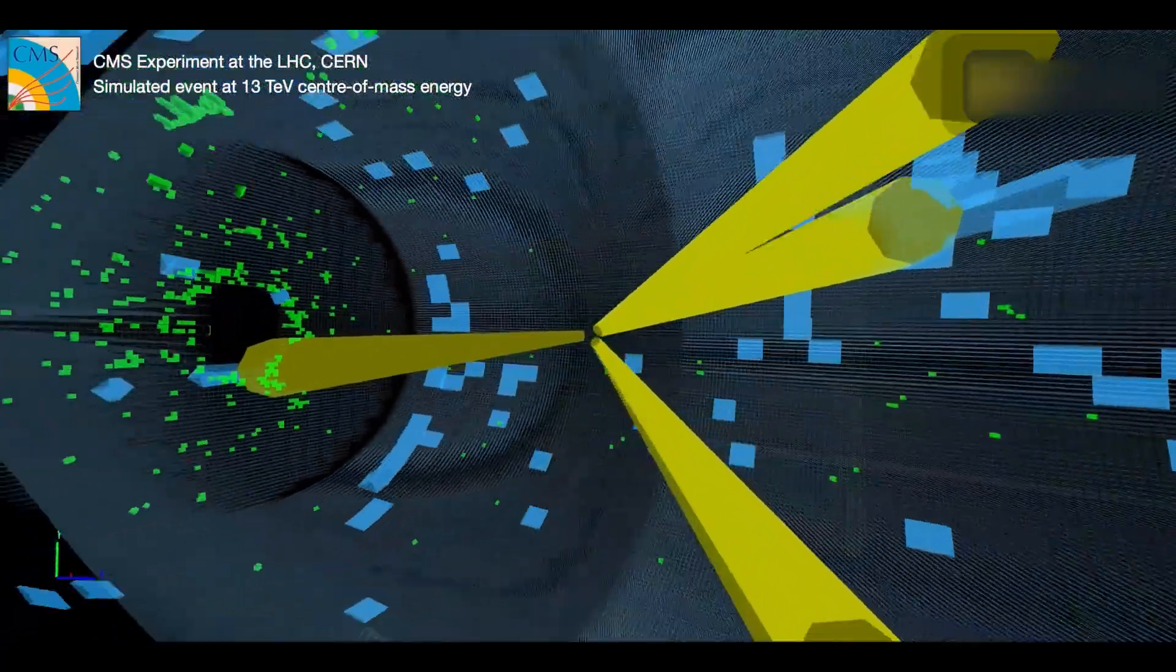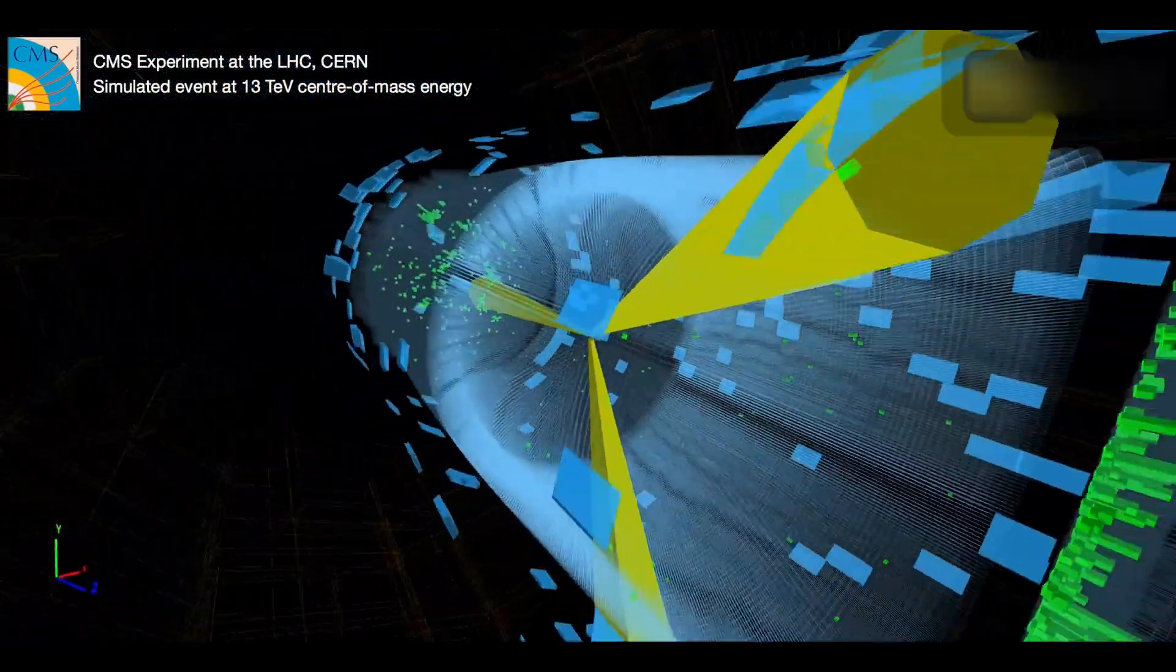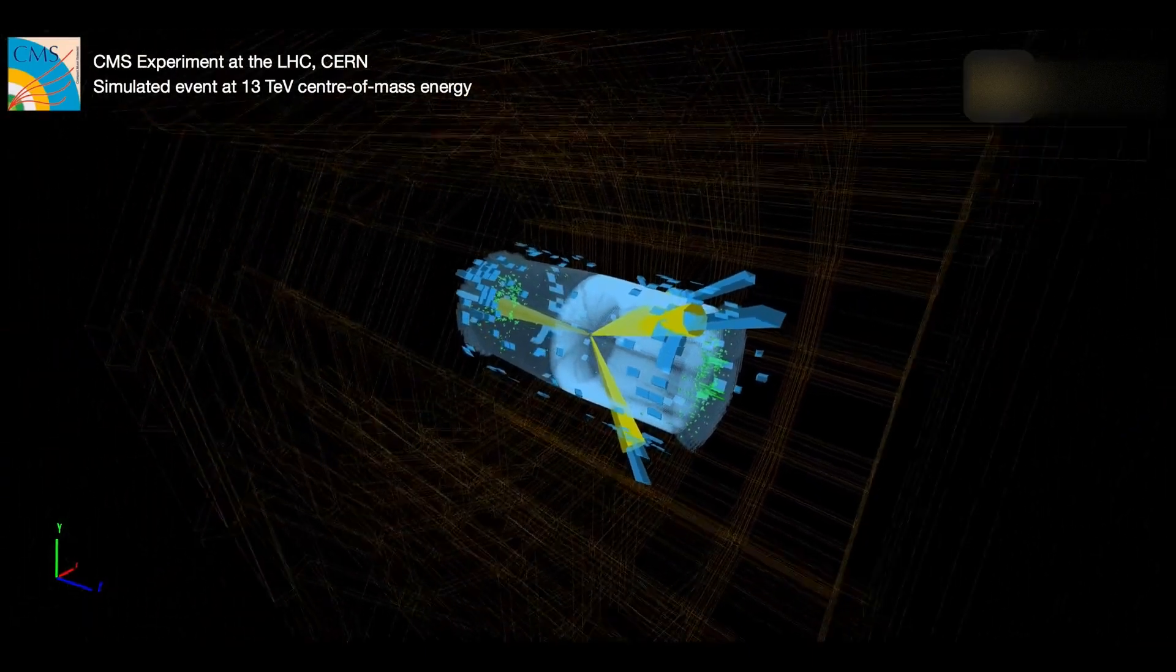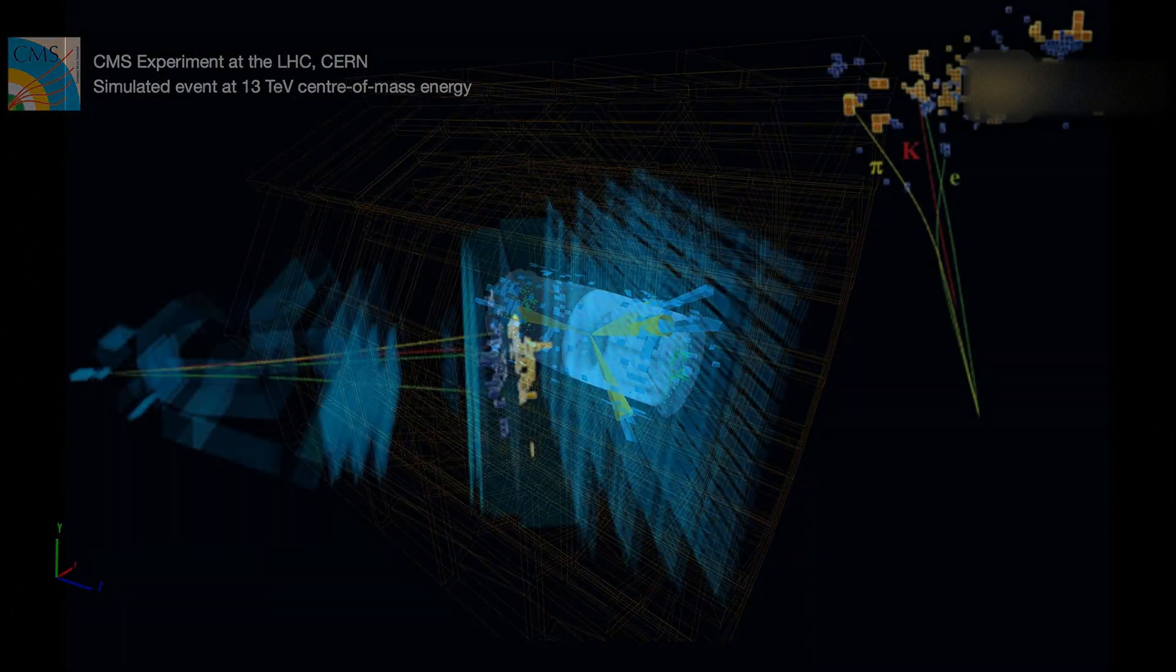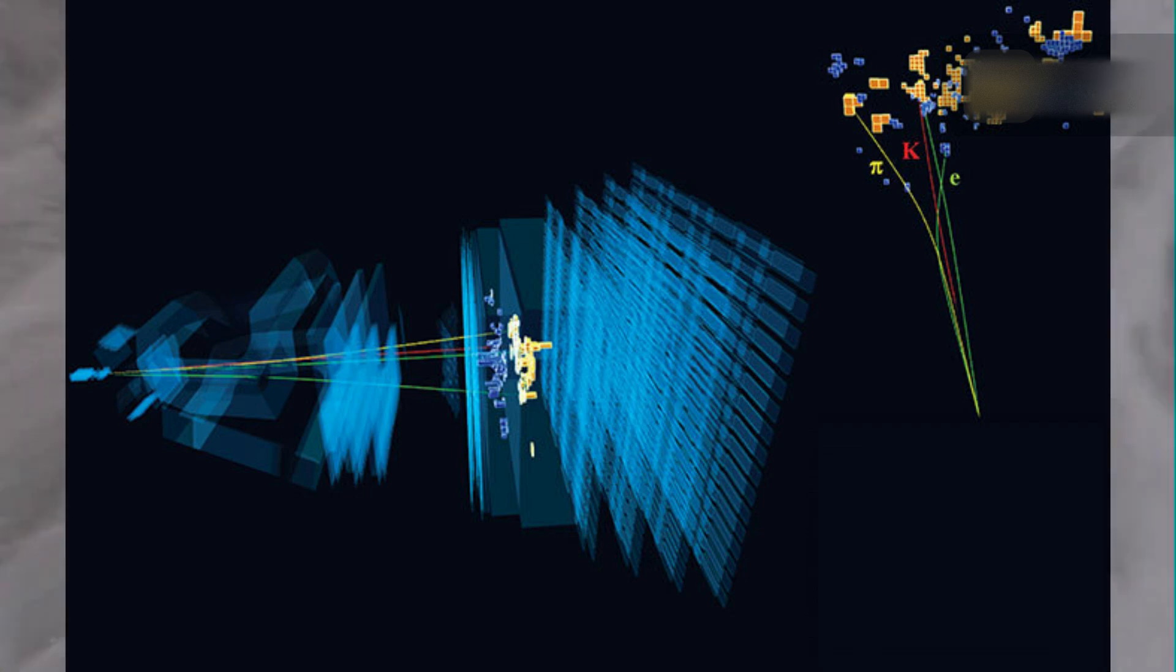In the standard model, the Higgs boson is a massive scalar particle with zero spin, even positive parity, no charge, and no color charge that couples to and interacts with mass. It is also highly unstable and breaks down into other particles shortly after its creation.